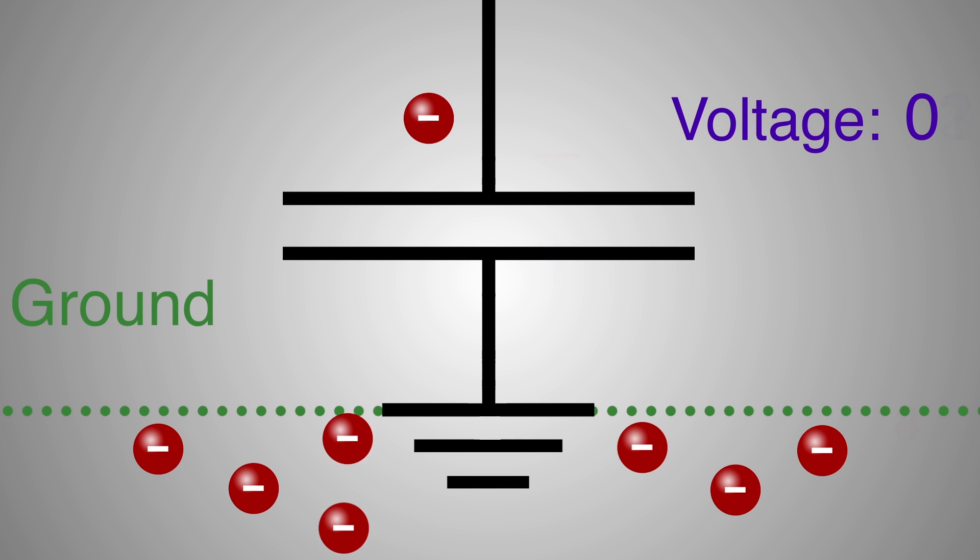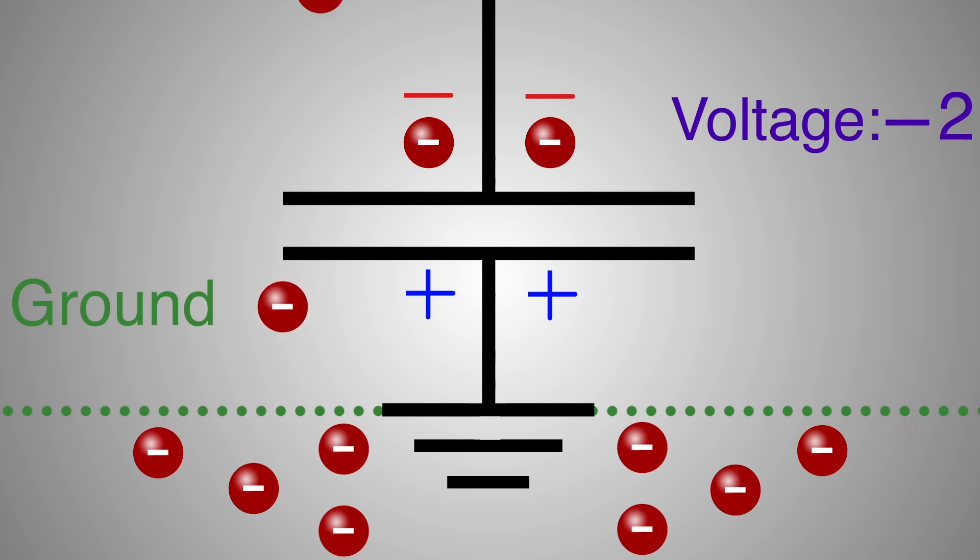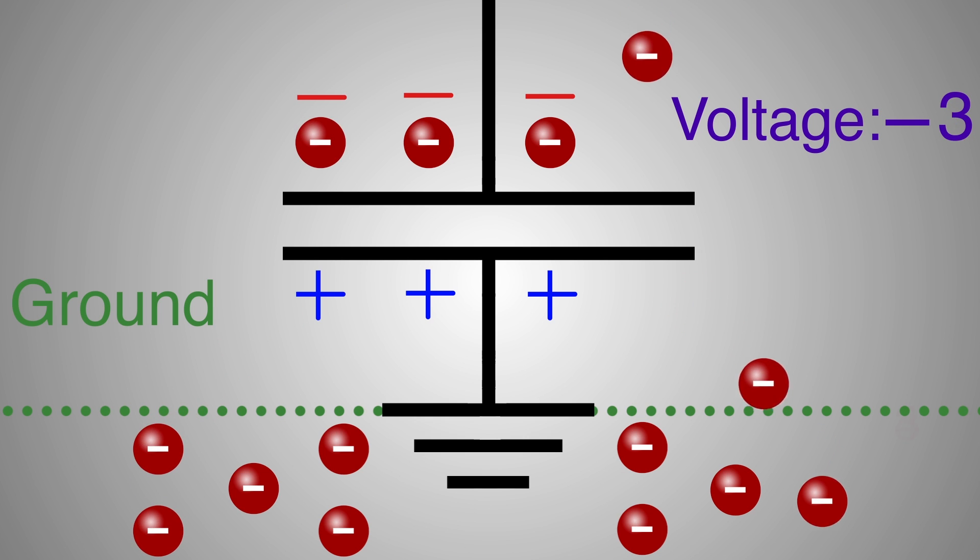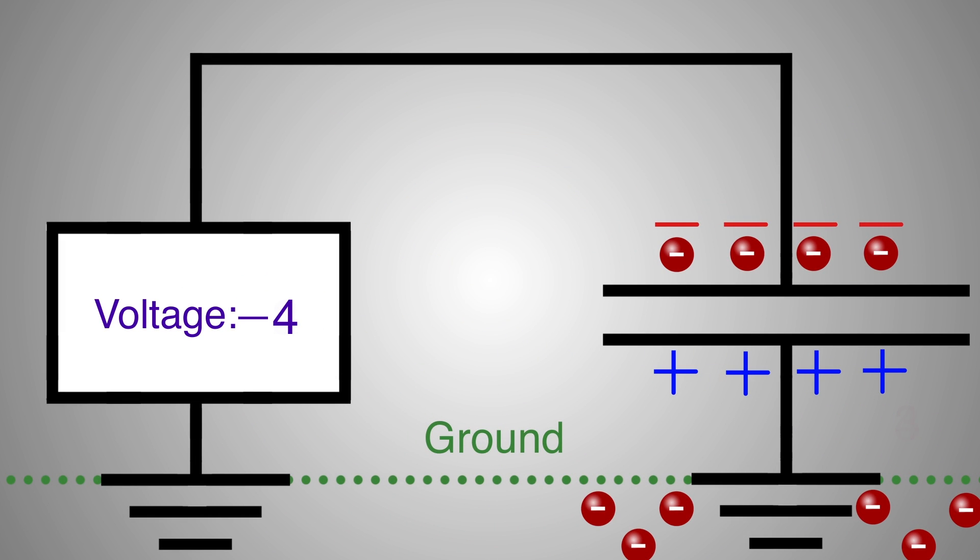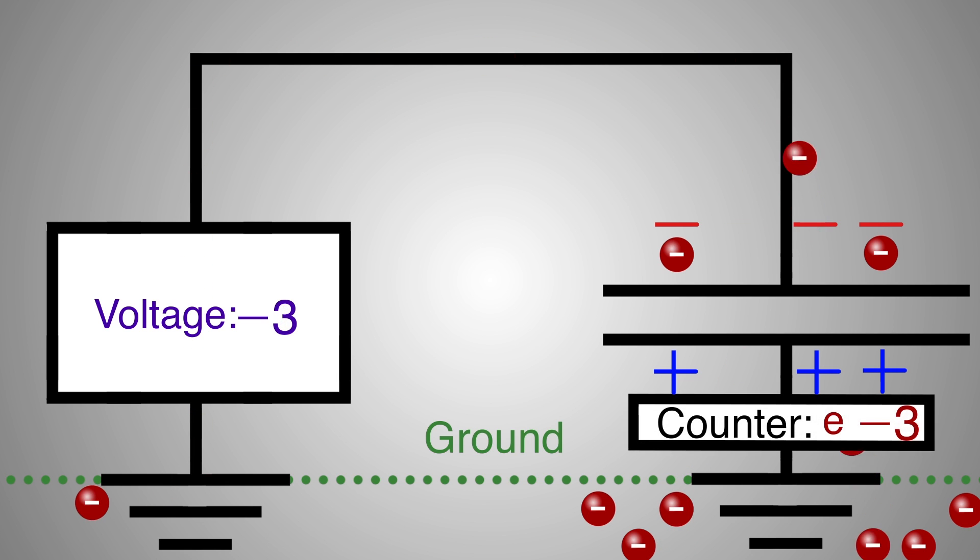As you can see from the animation, the volts across the capacitor correspond to a specific number of electrons or charge in the capacitor. So how do we measure capacitance? We count the number of electrons that go into or leave the plates at each voltage starting at zero. This requires a voltage generator and electron counter.